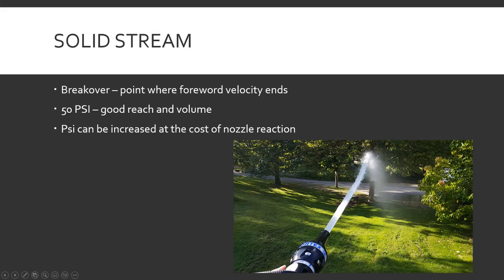50 PSI is the usual good reach-and-volume setting for a solid stream. You can increase PSI and get a little more reach and maybe a little more volume out of a smoothbore nozzle, but then there's more pressure pushing back on you that you have to fight. At 50 PSI, one person can pretty easily handle that all day. When you start getting to 90 or 100 PSI, that can get tiring — you spray a while, another guy comes in and switches.